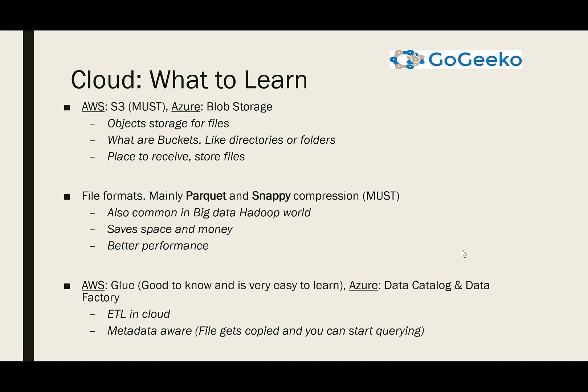What else you need to learn is AWS S3 — this is a must when you deal with data. That's where data will usually land. S3 is essentially object storage for files; think of it as directories or folders on your Unix box where files land and then get processed. In Azure it's called Blob Storage. You also need to learn about file formats — specifically Parquet and Snappy — which are very important in cloud environments.